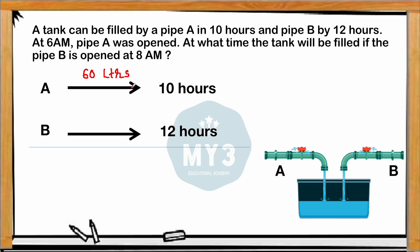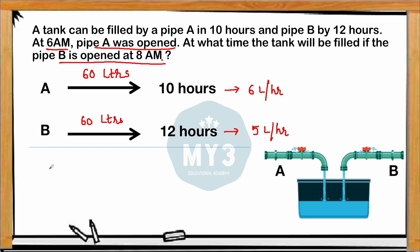Pipe A can fill 60 liters in 10 hours, so it fills 6 liters per hour. Pipe B can fill 60 liters in 12 hours, so it fills 5 liters per hour. From 6 AM to 8 AM, only pipe A is working — that's a 2-hour window. Pipe A is opened at 6 AM and pipe B is opened at 8 AM.